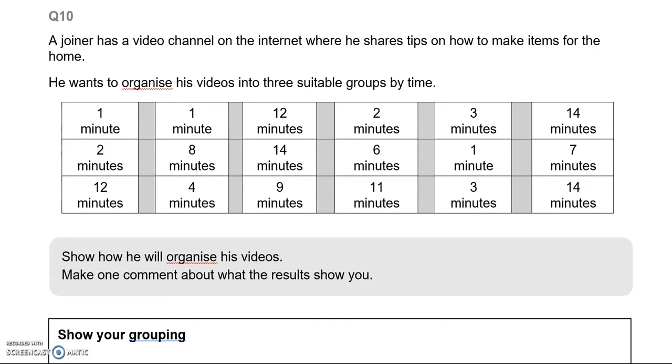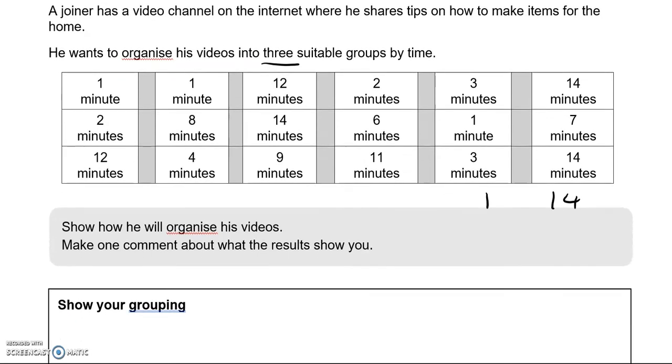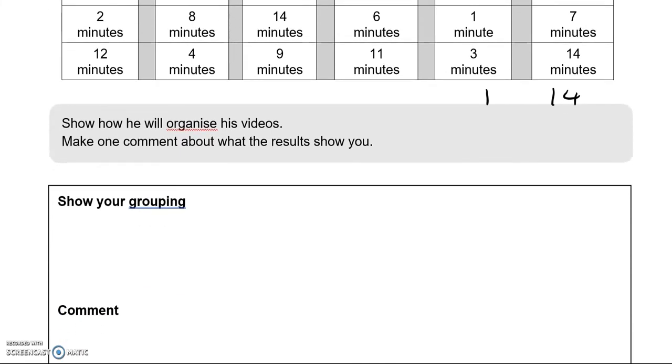Question 10. A joiner has a video channel on the internet where he shares tips for the home. He wants to organise his videos into 3 suitable groups by time. Show how he will organise his videos. Make one comment about what the results show you. So looking at these durations, I can see that the range is going to change from 1 minute to 14 minutes. So if I am to create 3 groups, then I am thinking of splitting them into 5. So 0 to 5, 6 to 10, 11 to 14 or 15.